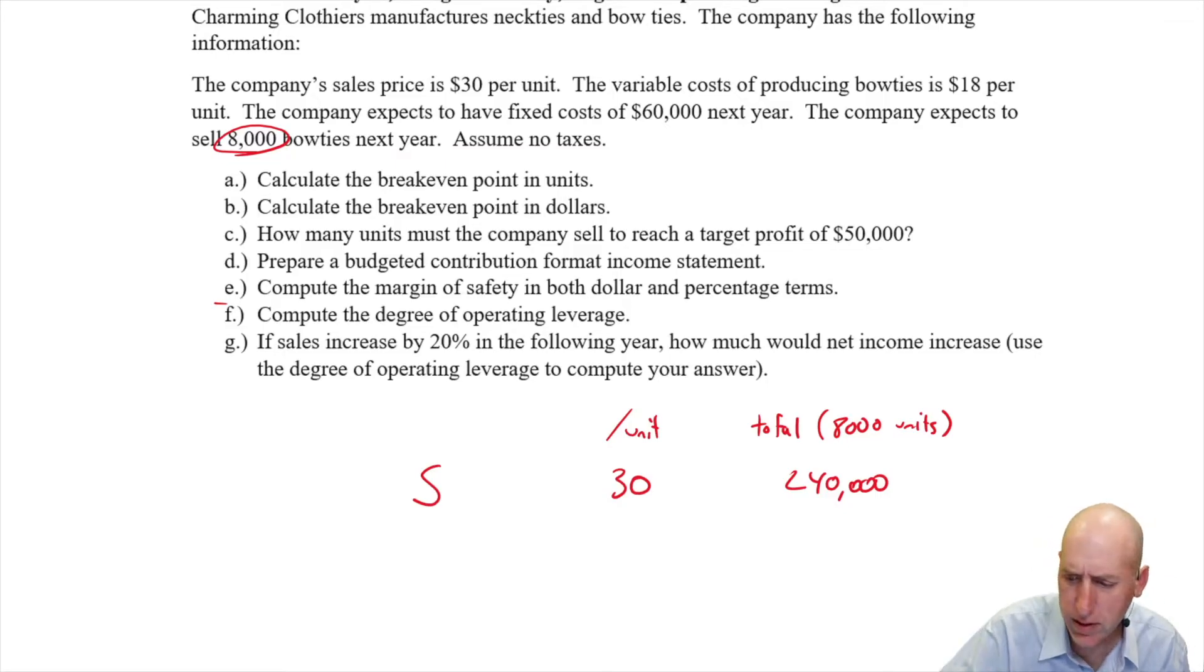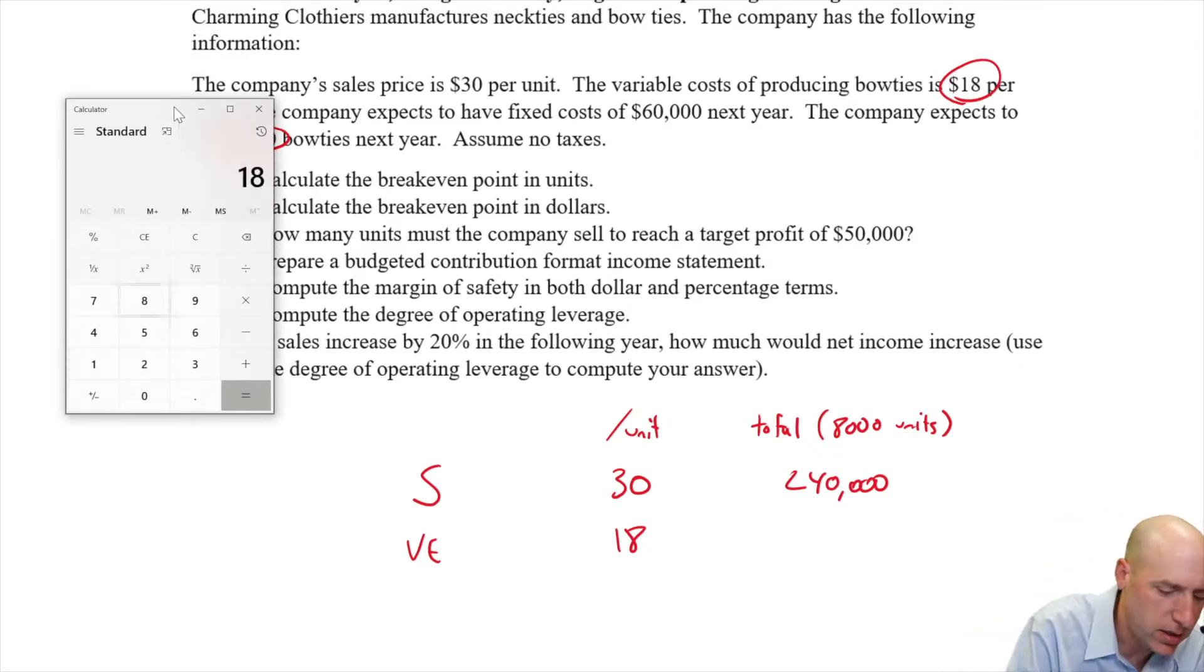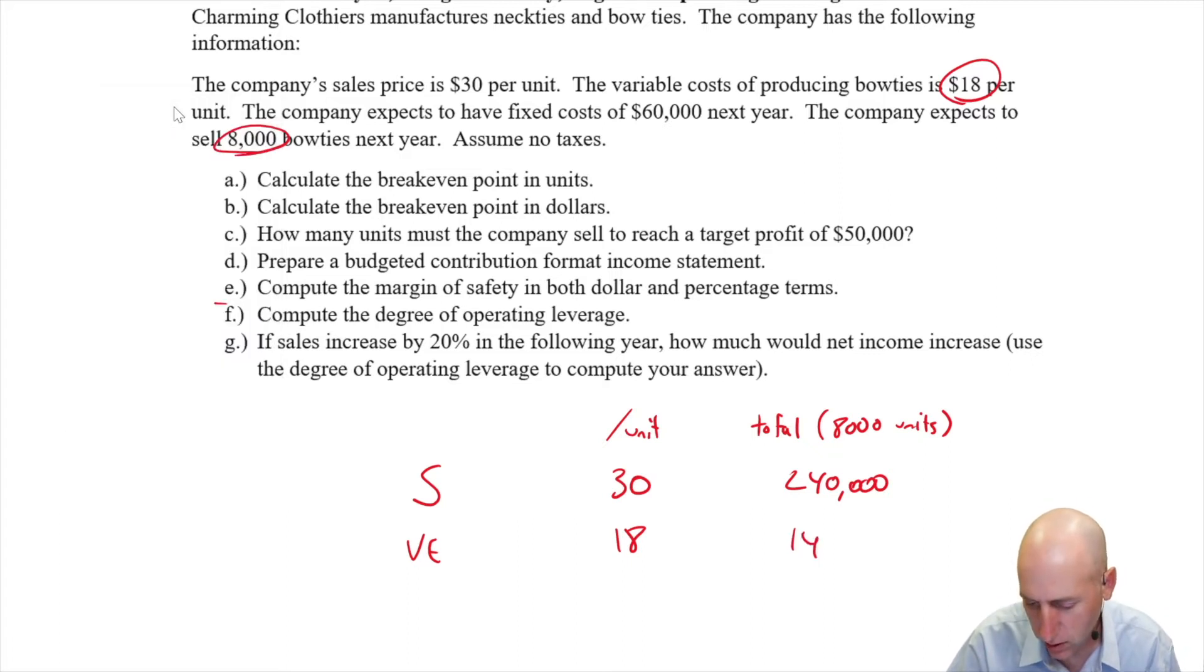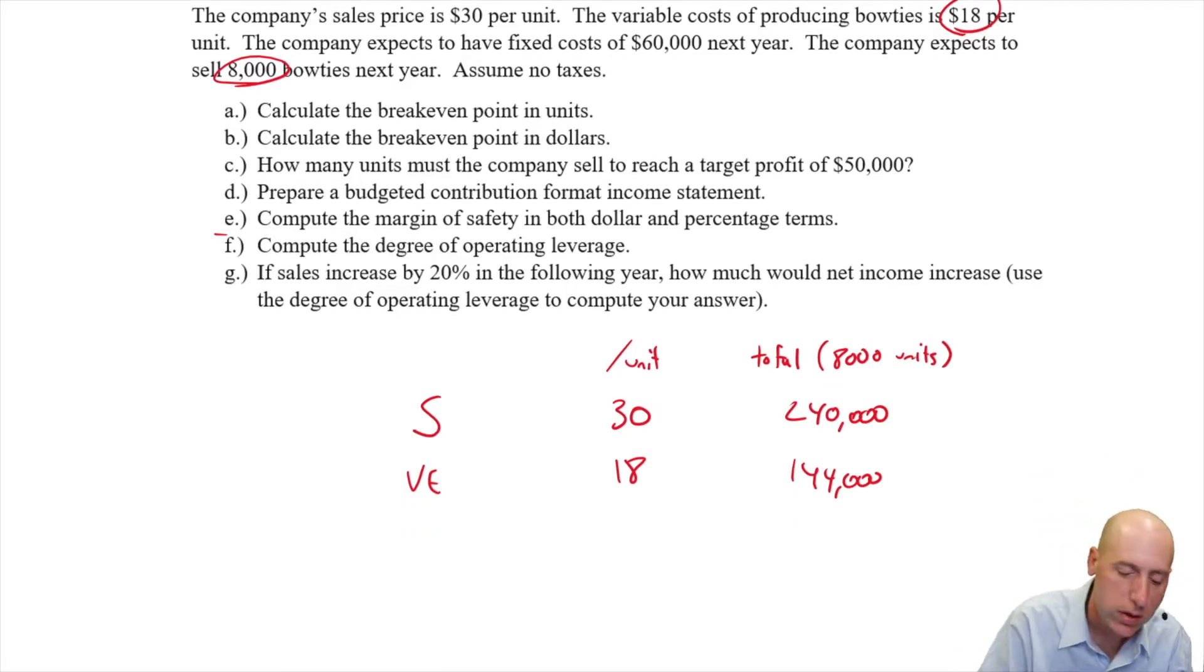So we also have variable expenses. It's meant to cost $18 per bow tie, variable expenses of 18. Need that calculator back. I should have just left it. 18 times 8,000 will mean $144,000 in costs of making and selling those bow ties, the variable costs. We know sales minus variable expenses equals contribution margin. Now, again, looking at a traditional income statement, sales minus cost of goods sold equals gross margin or gross profit. This is a little bit different. Sales minus variable expenses equals contribution margin. This creates something called a contribution format income statement.